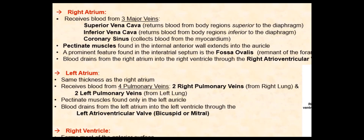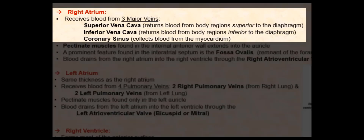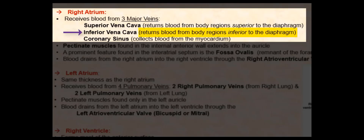Let us focus once again on the right atrium. The right atrium receives blood from three major veins. The first major vein and one of the great vessels of the heart is the superior vena cava. Blood from regions of the body superior to the diaphragm drains into the superior vena cava and into the right atrium. The second major vein and another great vessel of the heart is the inferior vena cava. Blood from regions of the body inferior to the diaphragm drains into the inferior vena cava and into the right atrium.